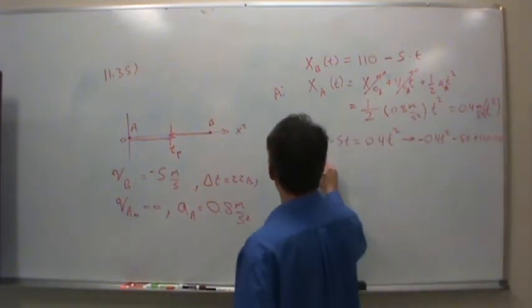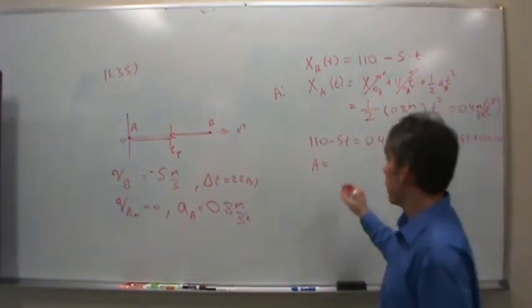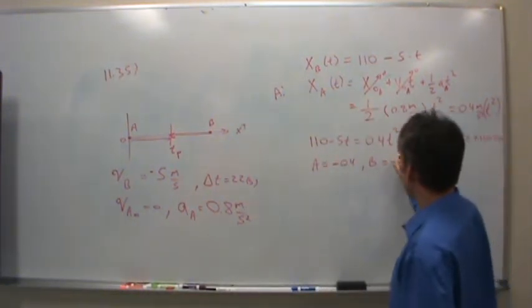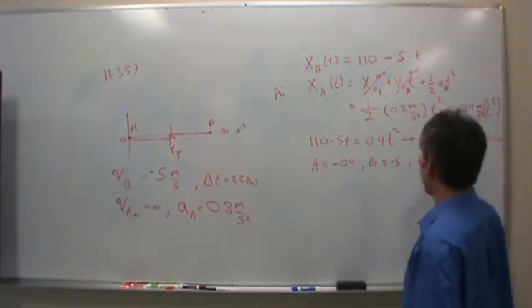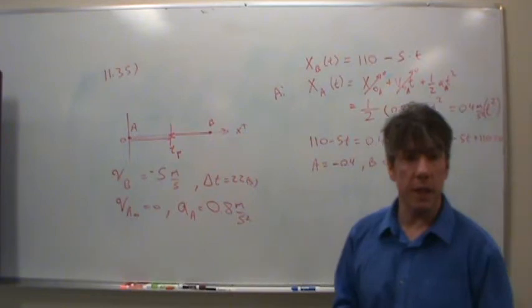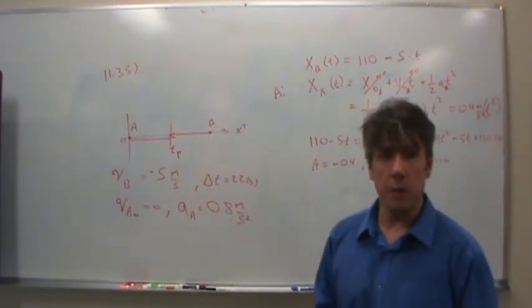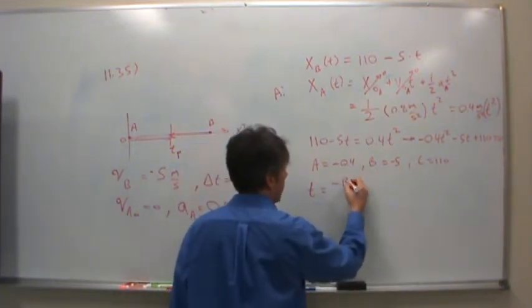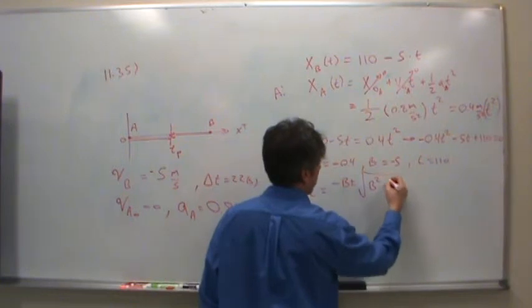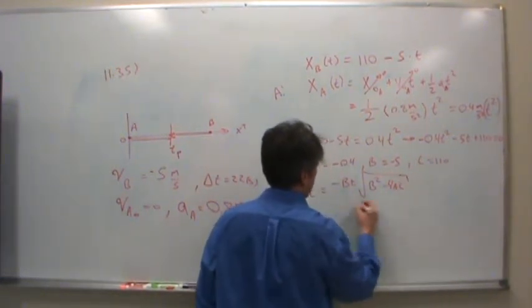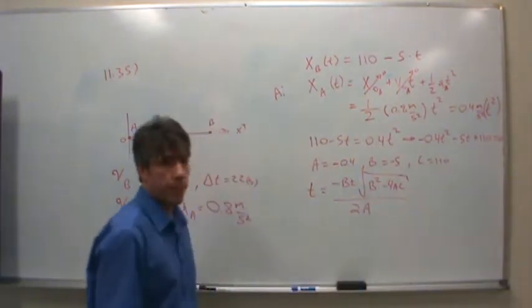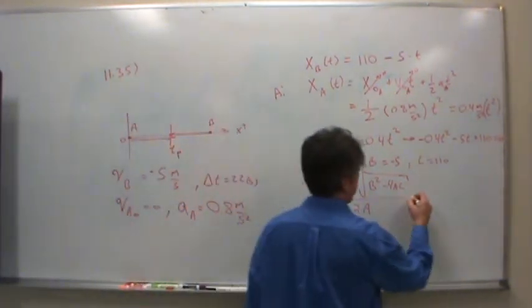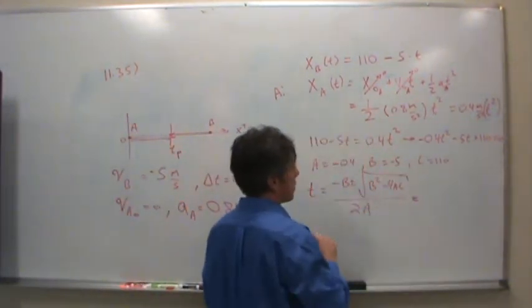And so now, what is A equal to in the quadratic solution? Negative 0.4. What is B equal to? Negative 5. And C is of course 110. Do you have the quadratic equation committed to memory? You should if you don't. Let me give it to you. T will be equal to negative B plus or minus the square root of B squared less 4AC divided by 2A. There's the quadratic formula. All I have to do now is plug in all the numbers we have for A, B, and C.